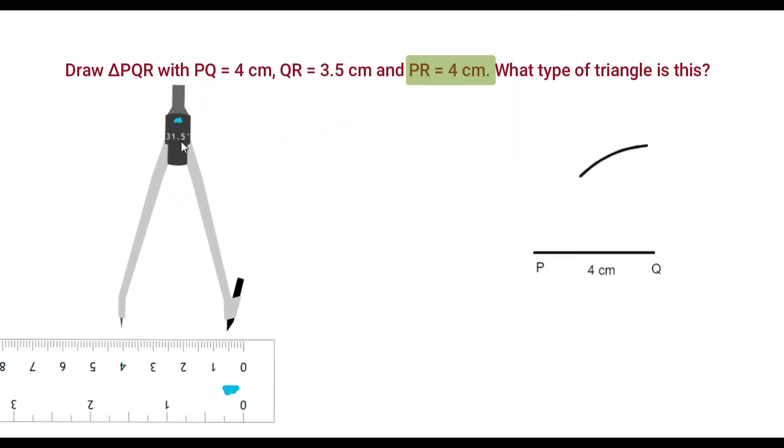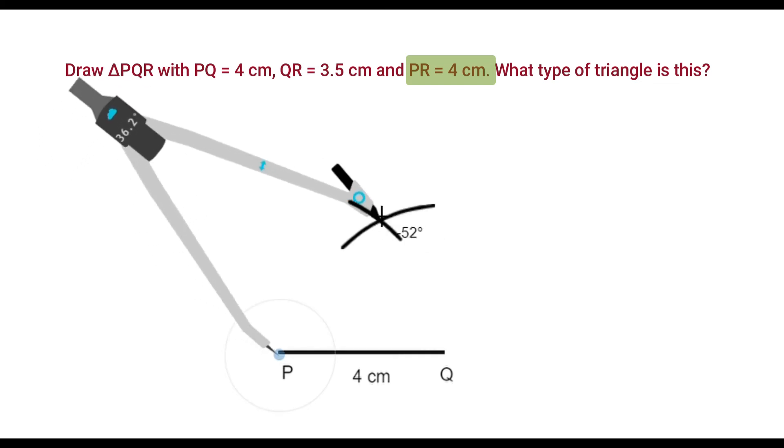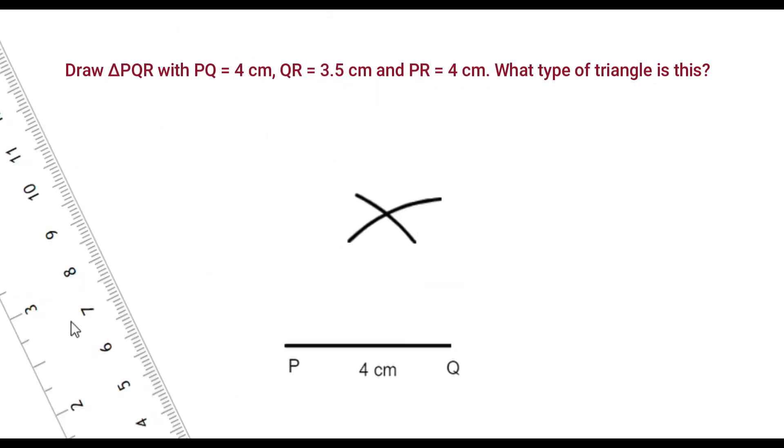Now, adjust compass up to length of 4 cm. Place compass on P and draw an arc that intersects the first one.